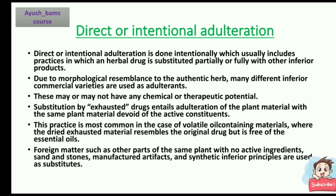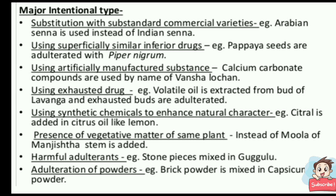Substitution by exhausted drug entails use of plant material devoid of active constituents. This practice is most common with volatile oil-containing materials, where dried exhausted material resembles the original drug but is free of essential oils. Foreign matters such as other parts of the same plant with no active ingredients, sand, stones, manufactured artifacts, and synthetic inferior principles are also used as adulterants.